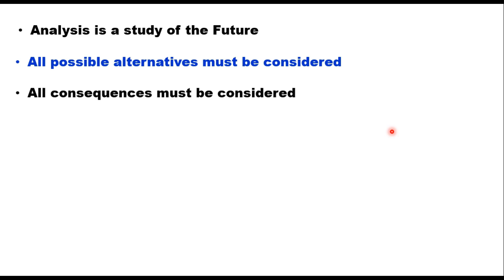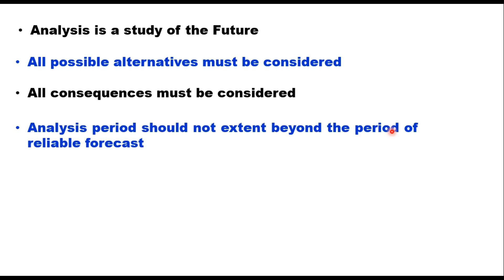The third point is that all consequences must be considered. The investments on highway bring about a variety of consequences, some of which are quantifiable and some are not. For example, the impact of a project on the environment is difficult to quantify, but it is an important consideration. The fourth point is that the analysis period should not extend beyond the period of reliable forecast, as forecasts beyond a reasonable period may involve uncertainty. Therefore, a period of 15 to 20 years beyond the completion of the project is generally considered appropriate.